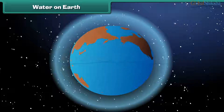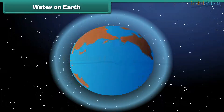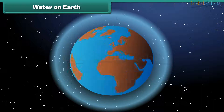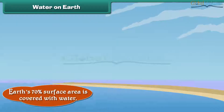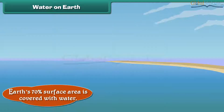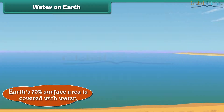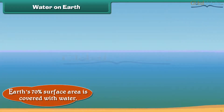So children, save every drop of water and don't let it go to waste. Water is the most abundant substance present on the earth. In fact, our earth's 70% surface area is covered with water.